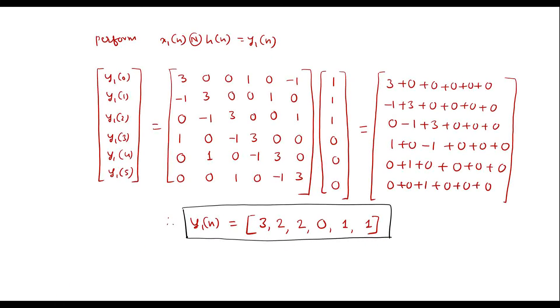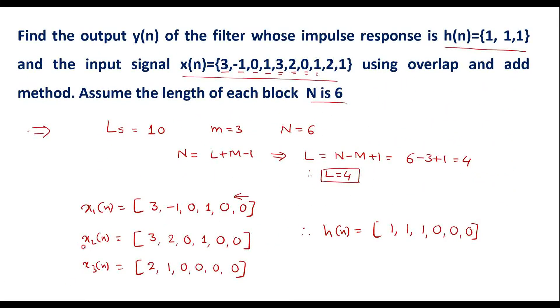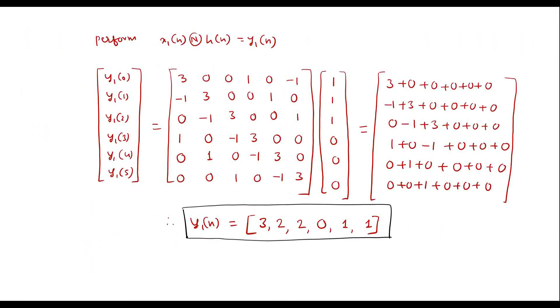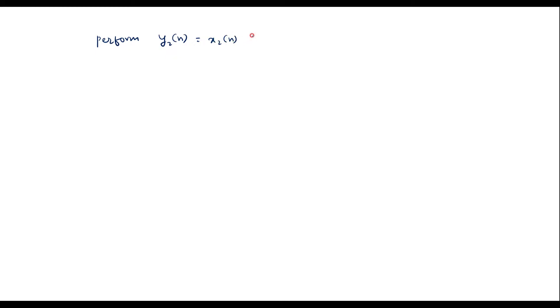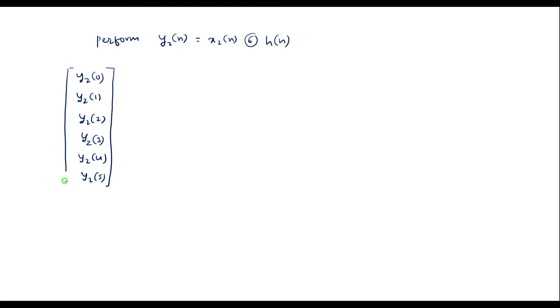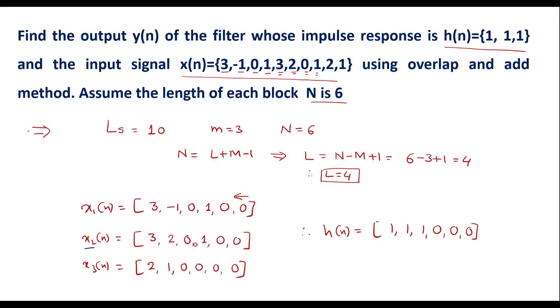Now perform the circular convolution between x2[n] and h[n], calling the result y2[n]. Writing y2[n] as a column matrix with entries y2[0] through y2[5]. The x2[n] sequence is 3, 2, 0, 1, 0, 0, written as a column vector.